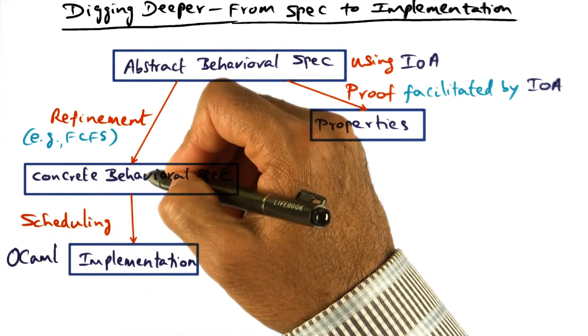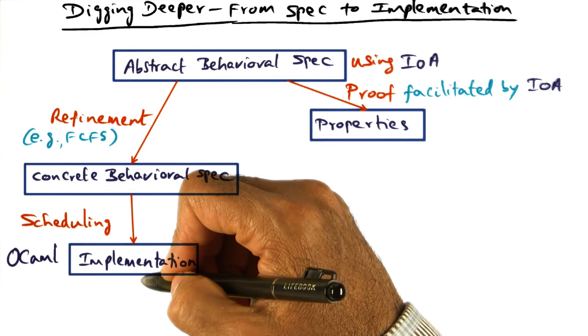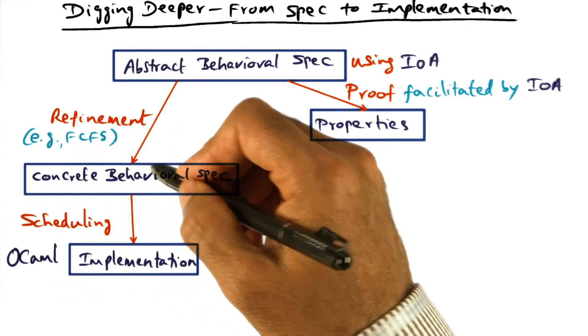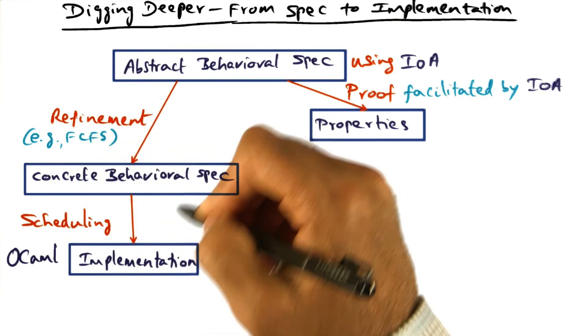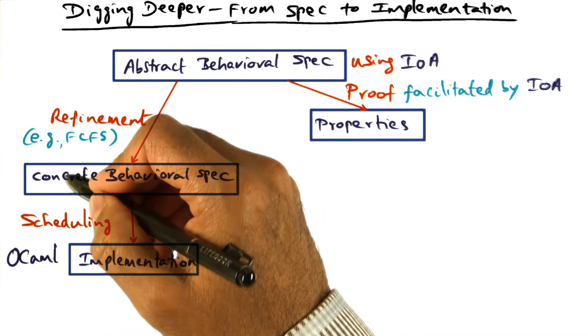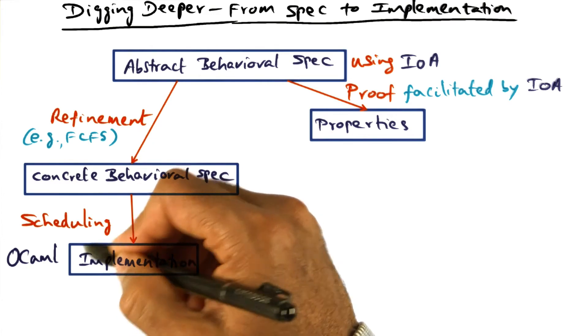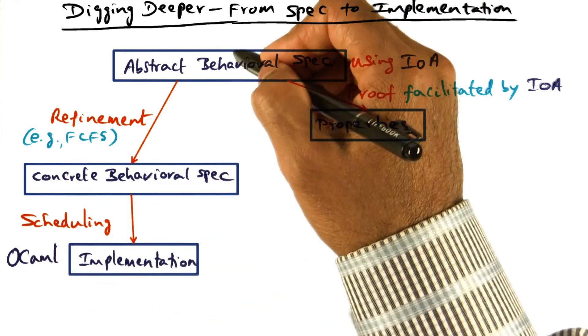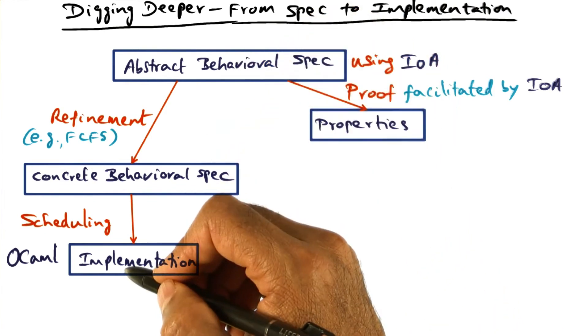Between the implementation and the concrete behavioral spec, there is not a whole lot of difference. It is really the scheduling of the operations that we want in the concrete behavioral spec that is being detailed when we produce OCaml code, which is finally executable code for the original abstract behavioral spec.